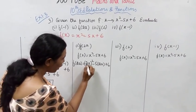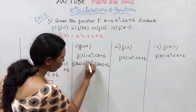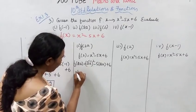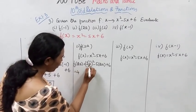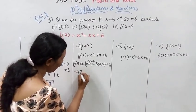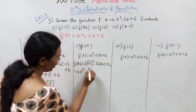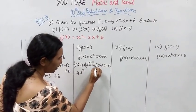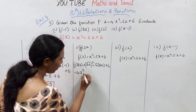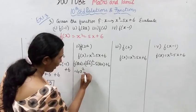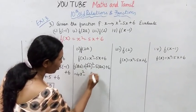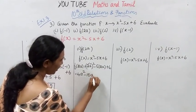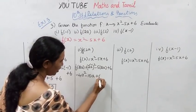For f of 2a, substitute x equals 2a: 2a the whole square minus 5 into 2a plus 6. 2a the whole square: 2 squared is 4, a squared, so 4a squared. Minus into plus gives minus. 5 into 2 gives 10a. So we get 4a squared minus 10a plus 6.